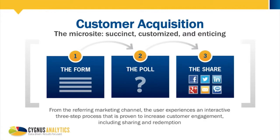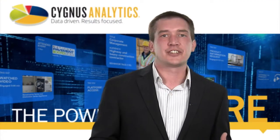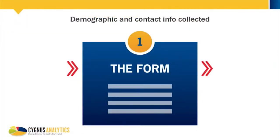When the customer arrives at the landing page from the referring marketing channel, he or she will experience a succinct three-step process. The customer should be given an incentive for providing their information and completing the program, which can be done in the form of a giveaway or providing the chance to win a prize. The first step in the process is the form — this is the primary contact acquisition source. Questions such as name, email address, postal information, company name, and telephone number can be asked.